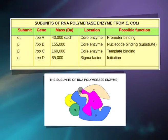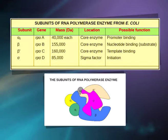The beta prime subunit is the largest subunit, encoded by the RPOC gene. It contains part of the active center responsible for RNA synthesis and also contains some of the determinants responsible for non-sequence-specific interactions with DNA and nascent RNA. The beta subunit is the second largest subunit, also encoded by the RPOC gene, and contains the rest of the active center responsible for RNA synthesis, as well as factors for non-sequence-specific interactions with nascent RNA and DNA.